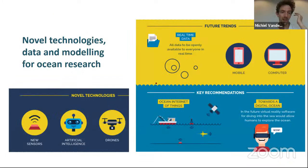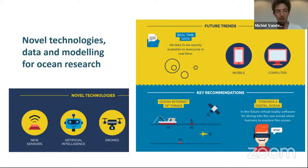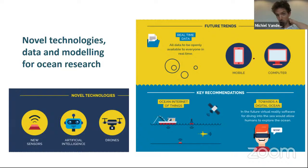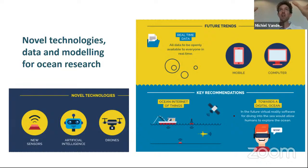The novel technologies, data, and modeling chapter remains very important to support answering questions in other themes and topics. From novel technologies it relates to new sensors broadly interpreted, artificial intelligence and autonomous vehicles. Looking at future trends: having real-time or near real-time data, making them open and available through various devices, and moving towards an ocean internet of things with interconnected sensors and a digital ocean — where Navigating the Future mainly referred to a virtual reality platform, but this is supported by layers of data and models that really describe how the ocean functions in a virtual way.